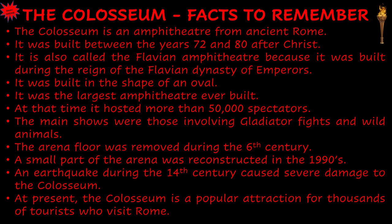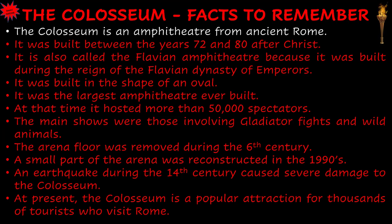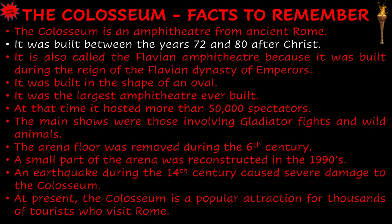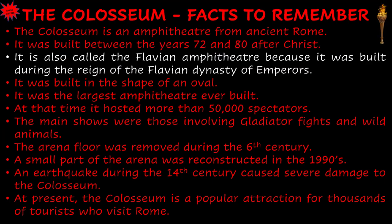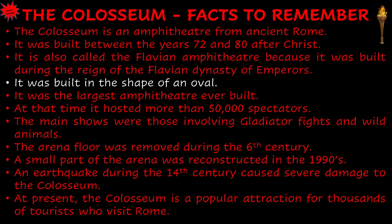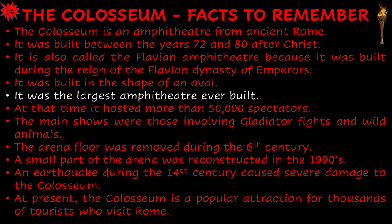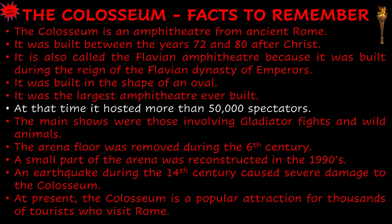The Colosseum — facts to remember. The Colosseum is an amphitheatre from ancient Rome. It was built between the years 72 and 80 after Christ. It is also called the Flavian Amphitheatre because it was built during the reign of the Flavian dynasty of emperors. It was built in the shape of an oval. It was the largest amphitheatre ever built, and at that time it hosted more than 50,000 spectators.